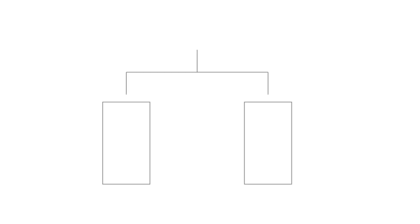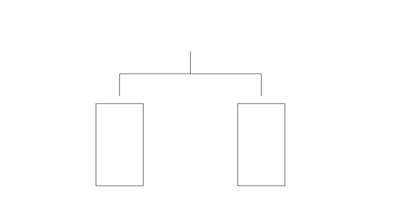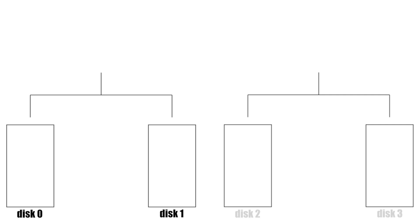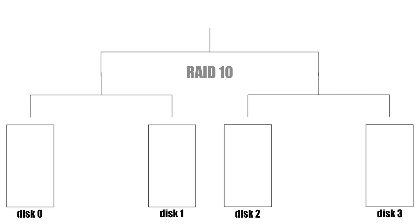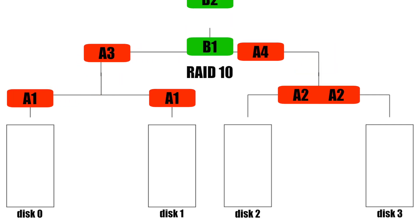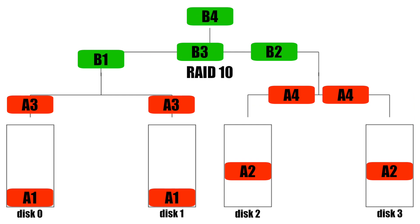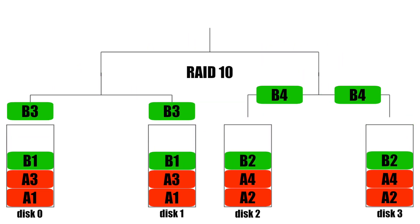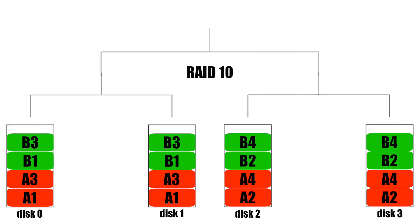You take two drives, mirror them together in RAID 1, repeat the process with another two drives, then you combine your two RAID 1 arrays together in RAID 0. This gives you a mix of speed and reliability.